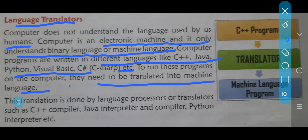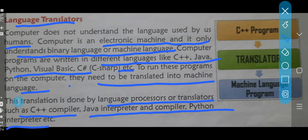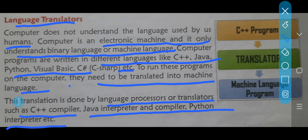This translation is done by language processor or translators, such as C++ compiler, Java interpreter and compiler, Python interpreter, etc. In ke translation ke liye bhi kuch language processors ka use kiya jata hai — C++ compiler, Java interpreter and compiler, Python interpreter, etc. To yeh saare jo hain — ek C++ program hai, phir translator hai, then machine language program — jab hum sab ko combine karenge na, to kya hota hai — language ka translator hota hai.